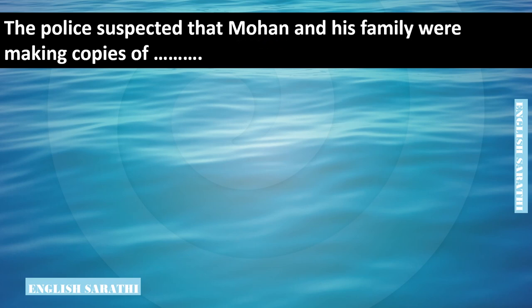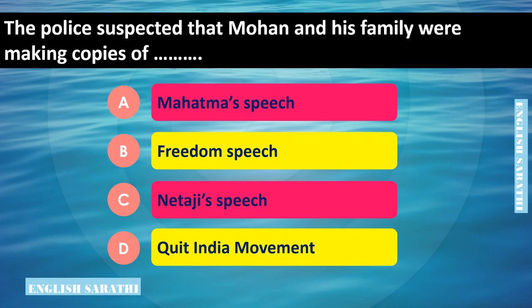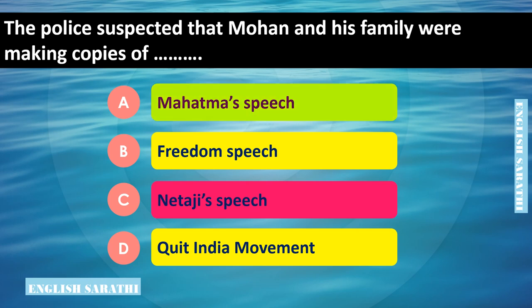The police suspected that Mohan and his family were making copies of dash. Options are: option A - Mahatma's speech, option B - freedom speech, option C - Netaji's speech, option D - Quit India movement. The correct option is option A - Mahatma's speech. The police suspected that Mohan and his family were making copies of Mahatma's speech.